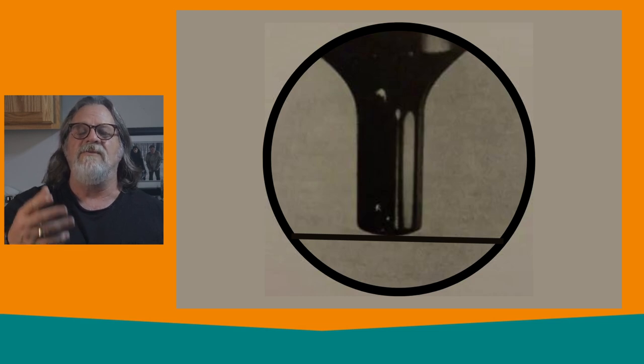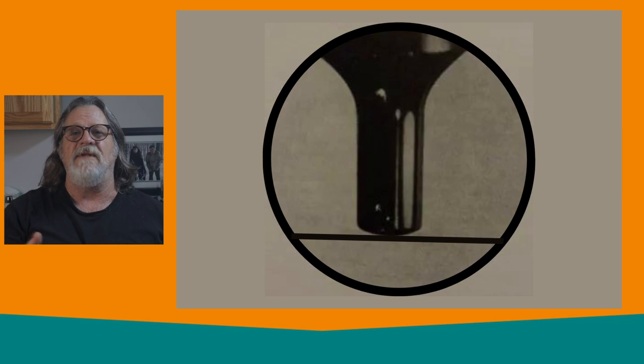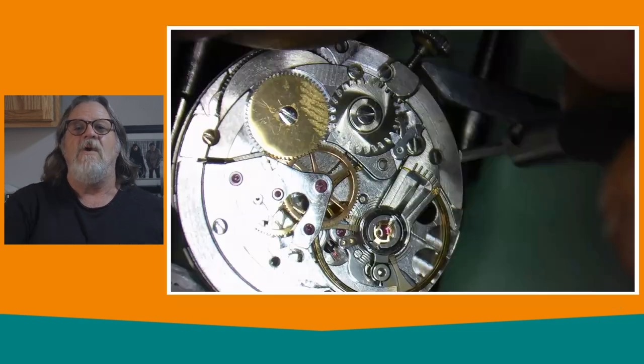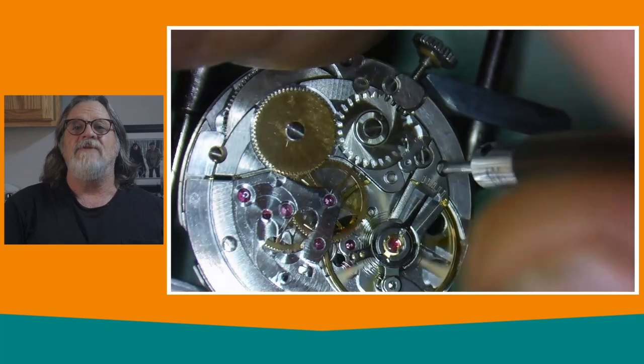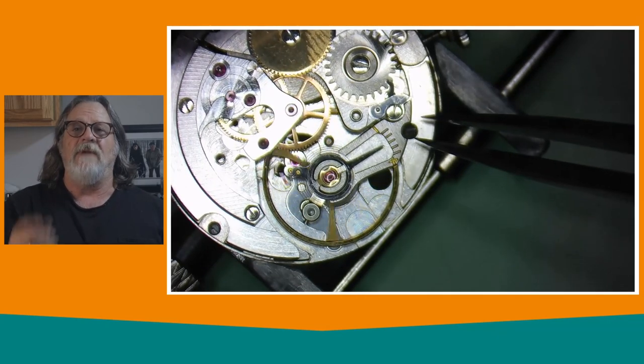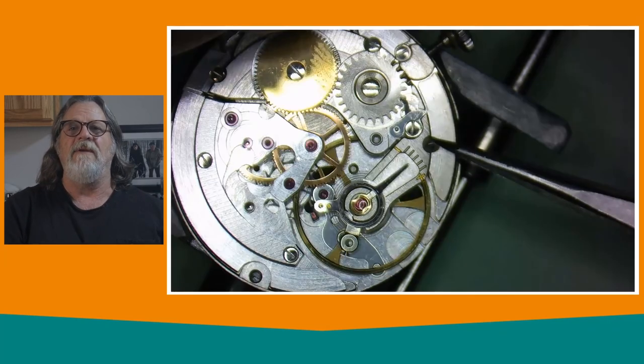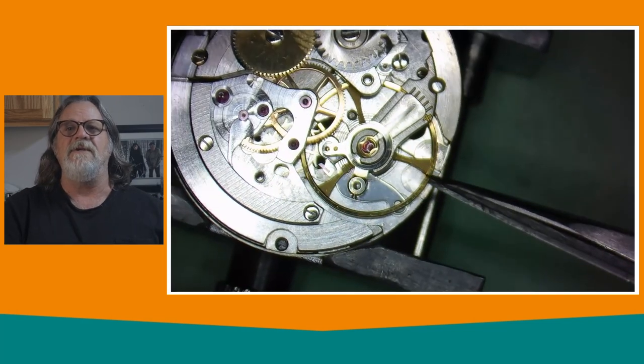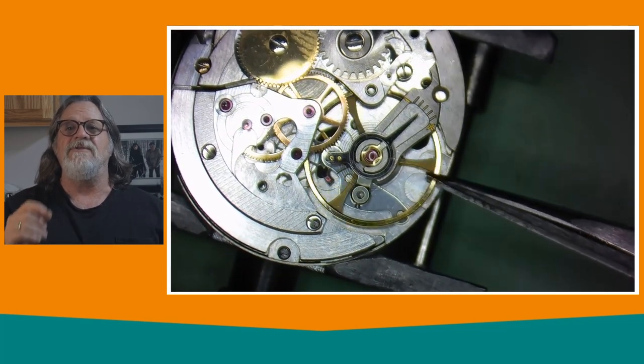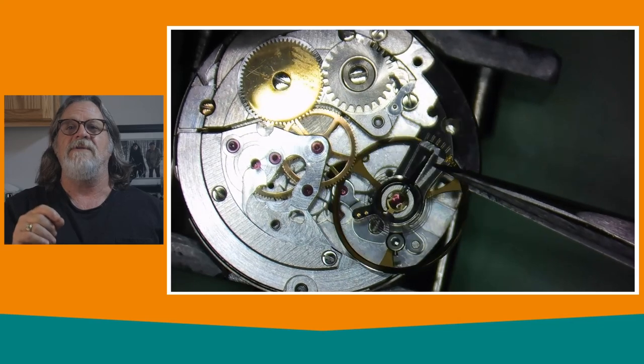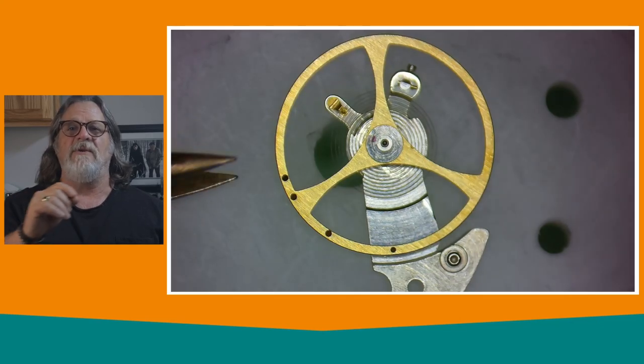The tip of the balance pivot has a slight dome shape to it, which is there to reduce friction as it spins back and forth on the end stone. The flatter the tip, the more friction. The more domed the tip, the less friction. What we're going to attempt to do here is lower the amplitude on the opposite jewel in the main plate, or the dial down position, by adding friction so that the amplitude and rates are as close to equal as possible.